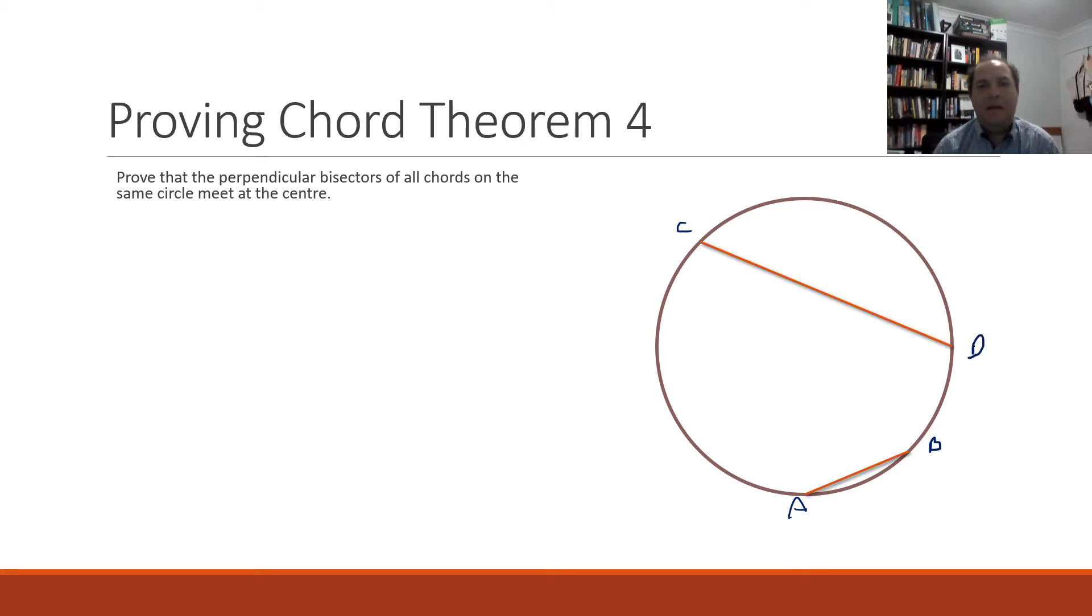And now what we'll need is some perpendiculars to these chords. So let's say PR and ST are perpendicular bisectors of AB and CD respectively. Now with those bisectors we need to show that the perpendicular bisectors of those chords meet at the same point and meet at the center.